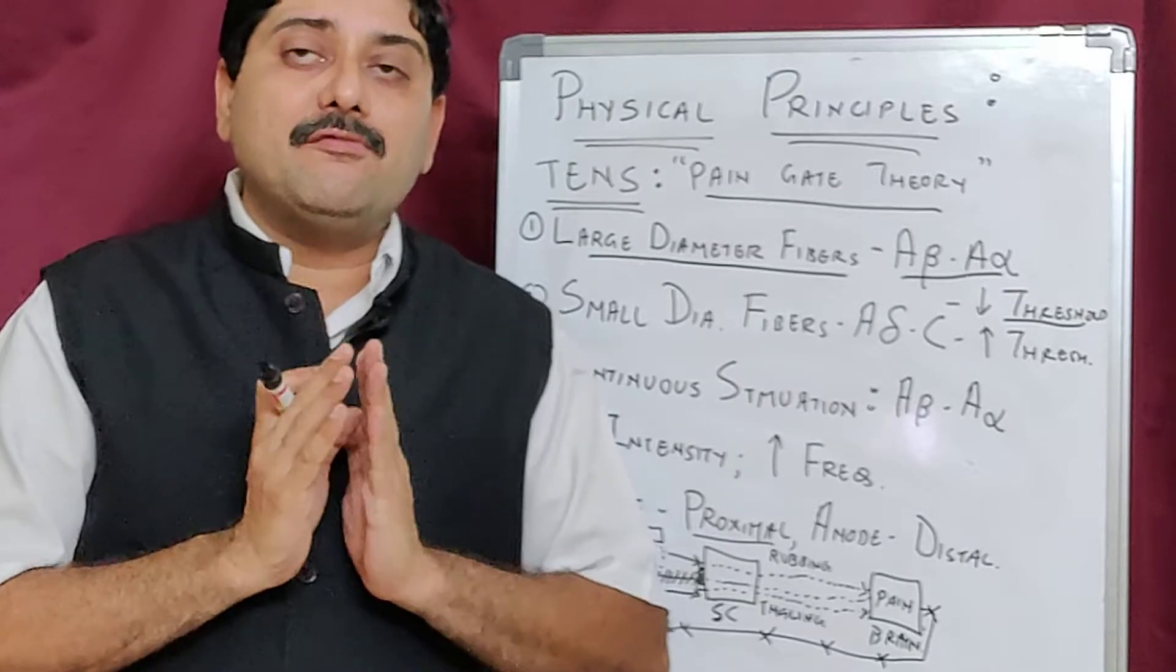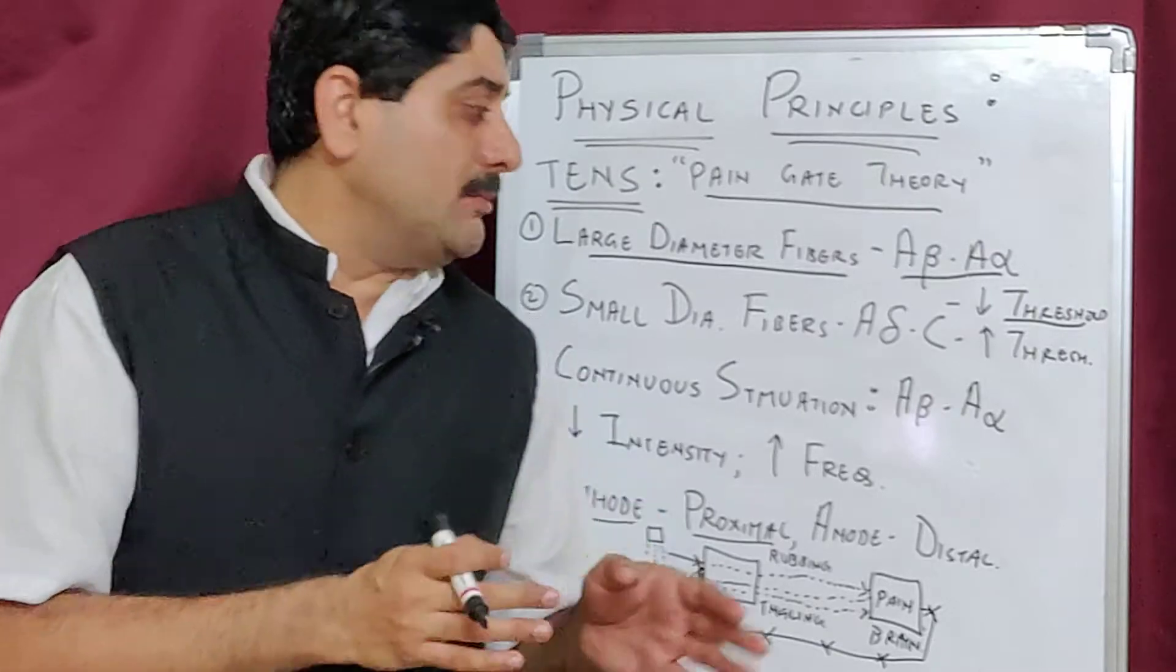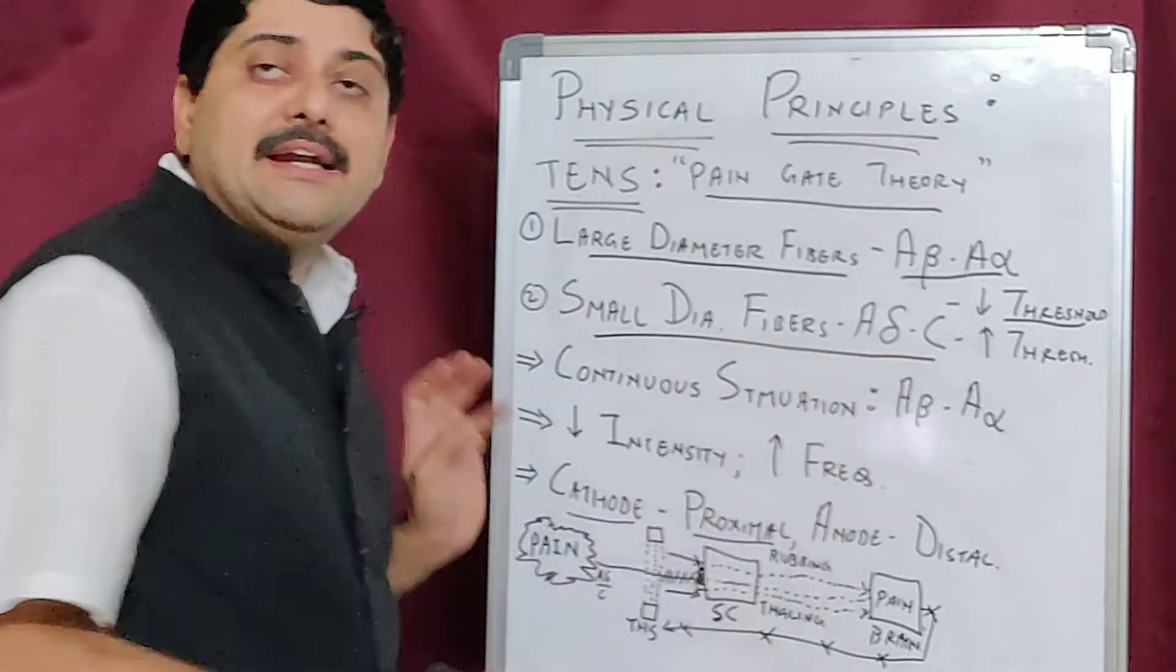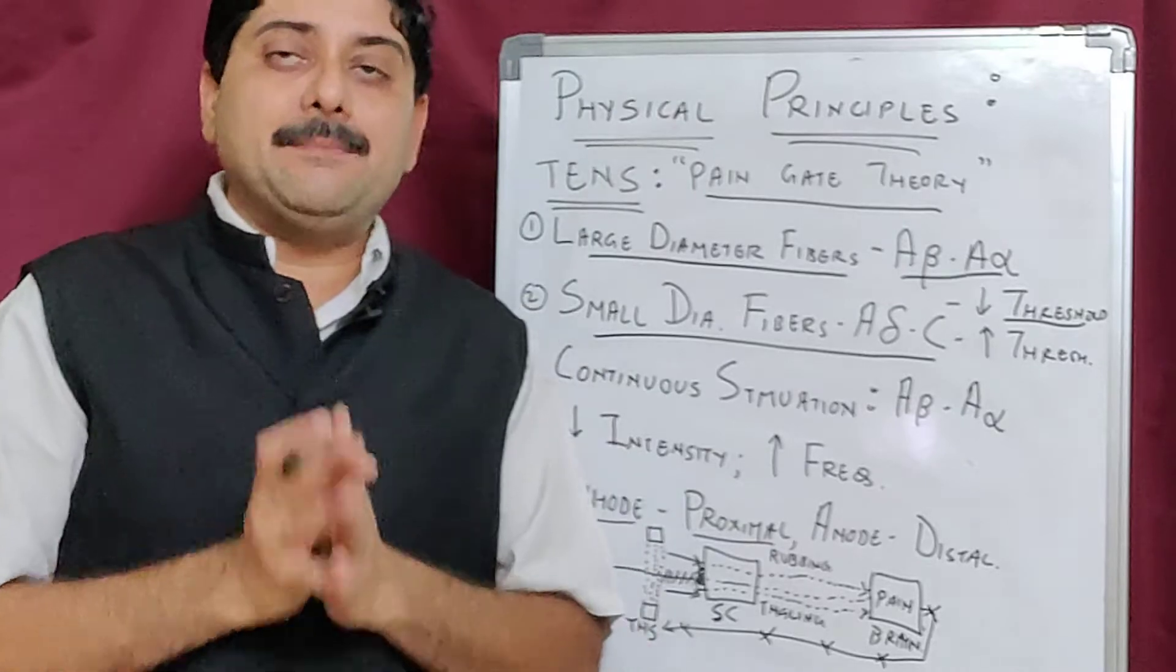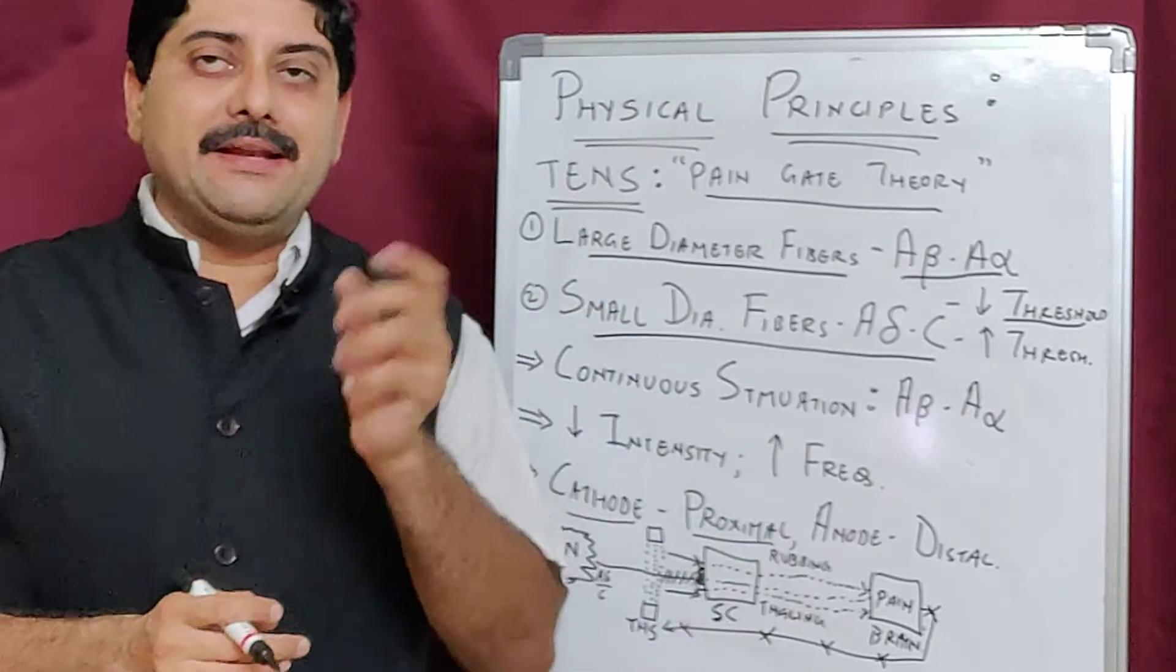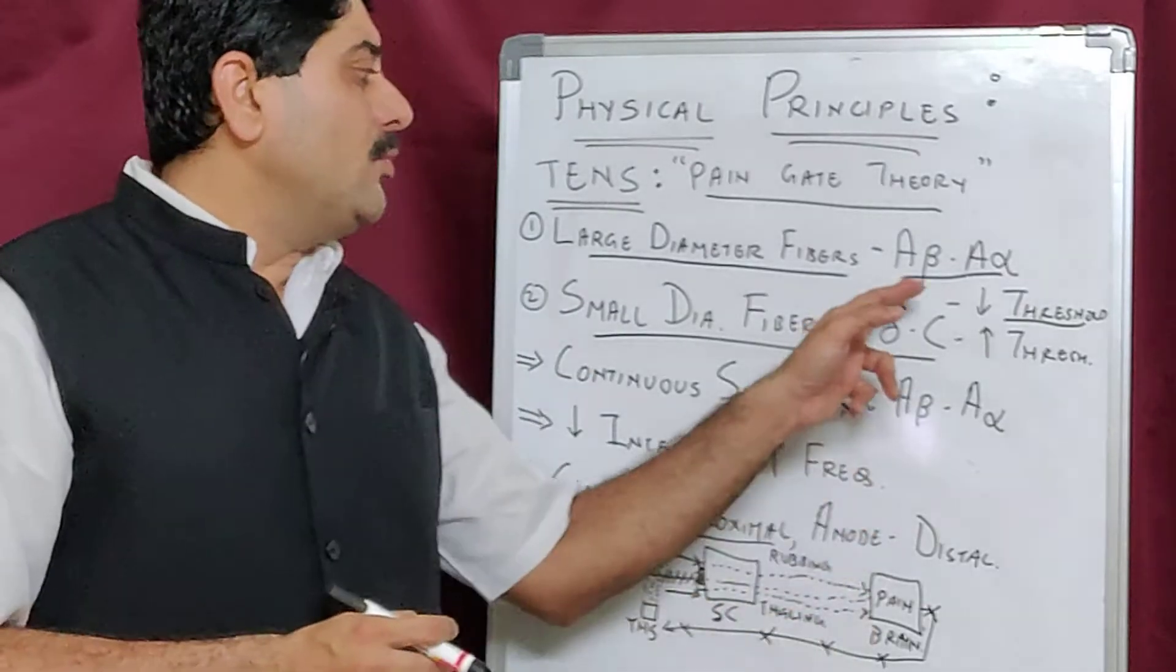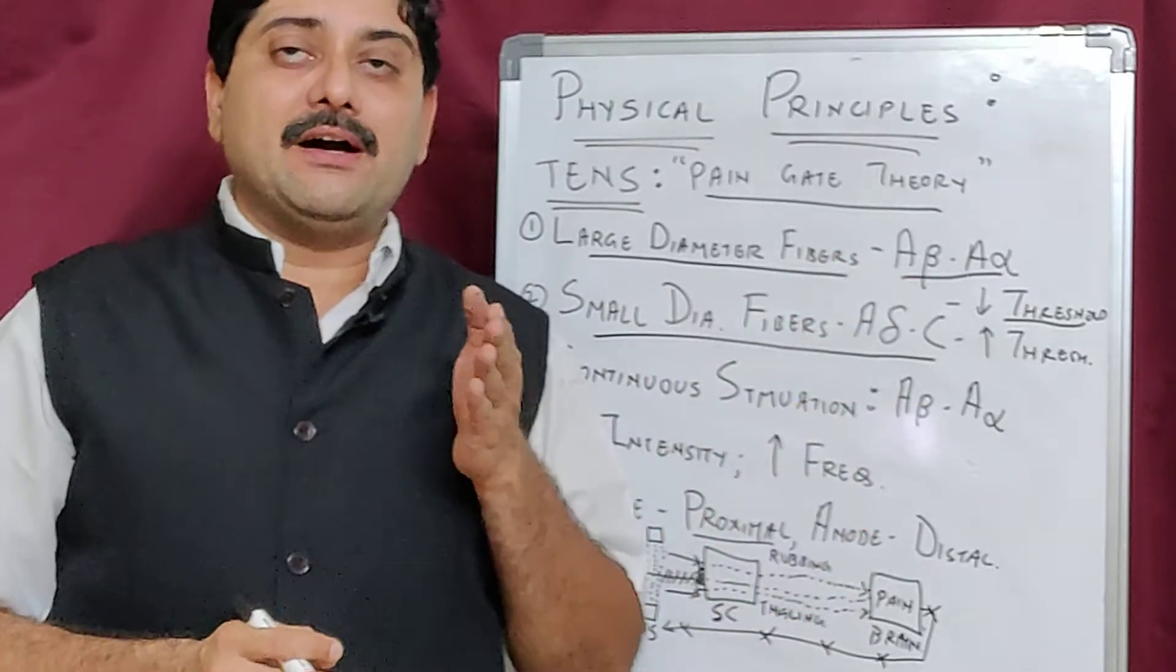These stimuli travel faster when compared to the stimulus of small diameter A-delta and C fibers which carry pain. The small diameter A-delta and C carry pain at slower speed compared to the A-beta and A-alpha types.